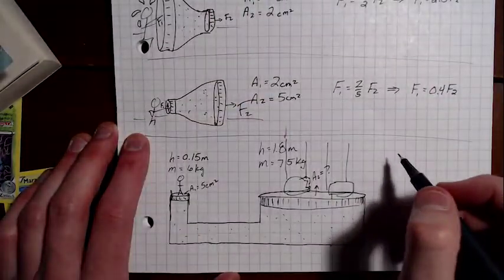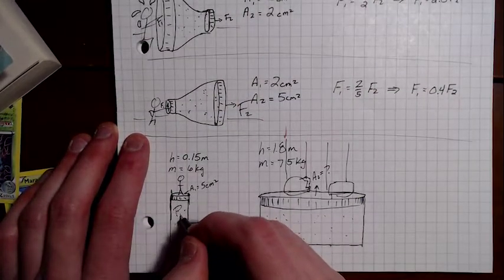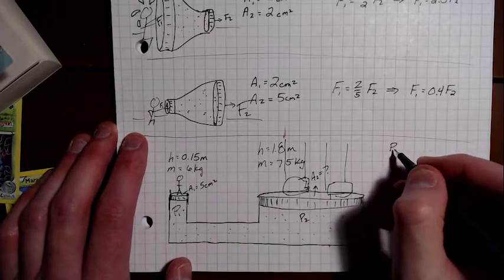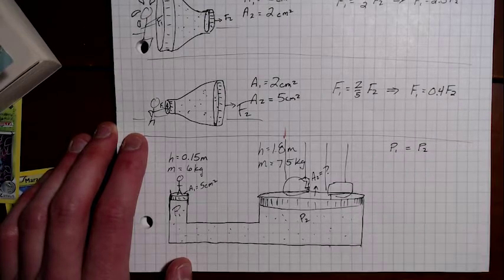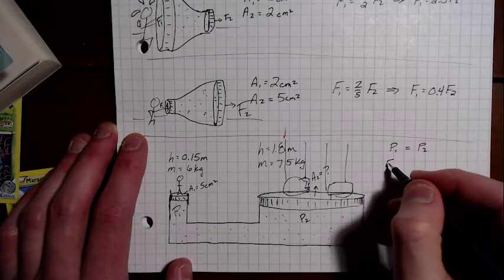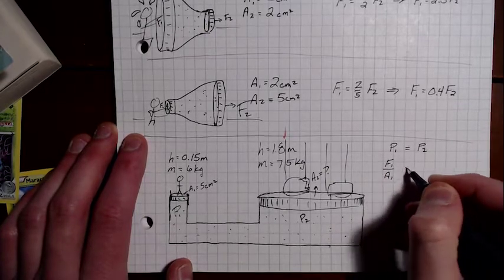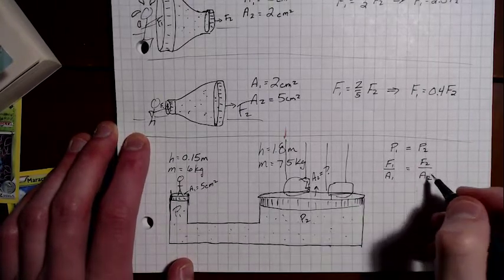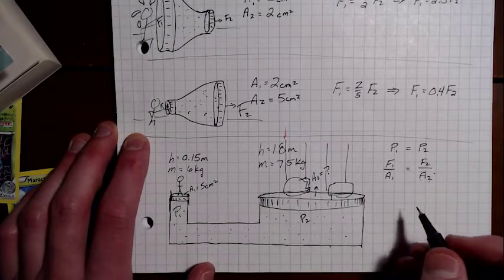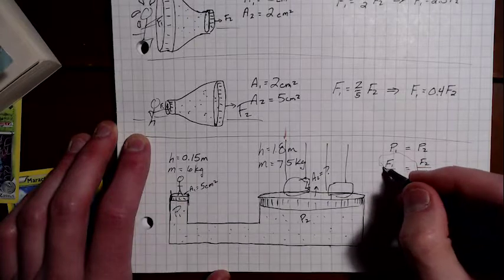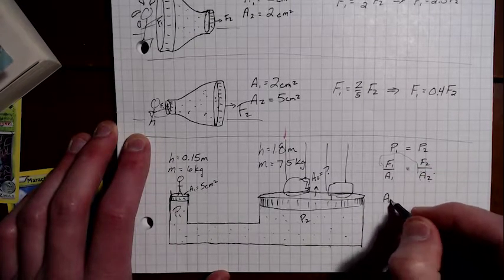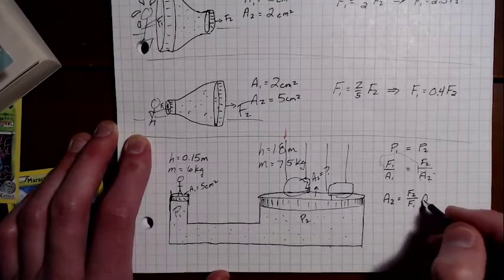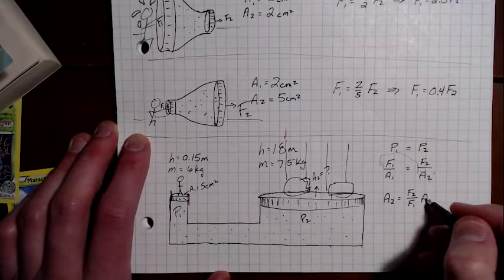Well, we can use our equation. Remember that the pressure over here at P1 is going to be the same as at P2. So let's rewrite that as P1 equals P2. We're going to plug in our pressure equations. We have F1 over A1 is equal to F2 over A2. And we're solving for A2. So if we do a little bit of algebra, we're going to move this up here, we're going to cross multiply. So we're going to get A2 equals F2 over F1 times A1. So now we're dealing with the ratio of forces instead of the ratio of areas.